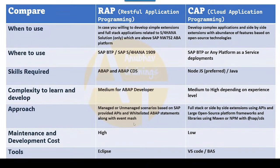So in that case, you go with RAP. When it comes to CAP — full-stack or side-by-side applications — you can use APIs as well as large open-source platform frameworks and libraries using Maven and Node.js to build your CAP application. The biggest USP, what I love about CAP, is the ecosystem. The Node.js ecosystem is much bigger than the ABAP ecosystem, because it gives you millions of reusable modules which you can use to build your applications on top.